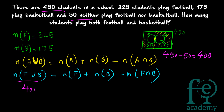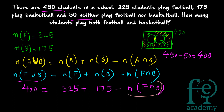So 400 = 325 + 175 − N(F ∩ B). We need to find N(F ∩ B). Therefore N(F ∩ B) = 325 + 175 − 400.